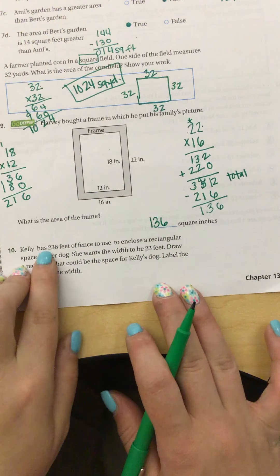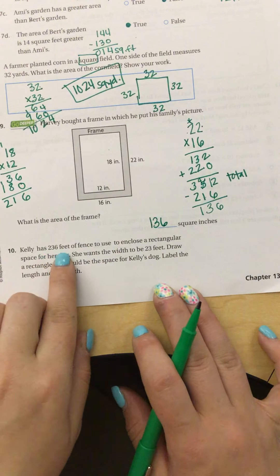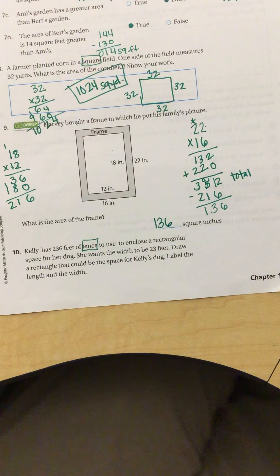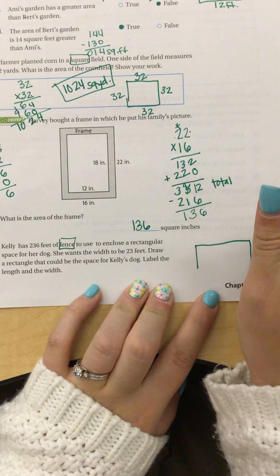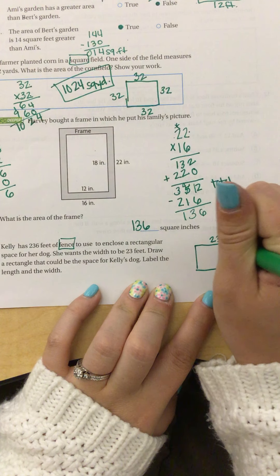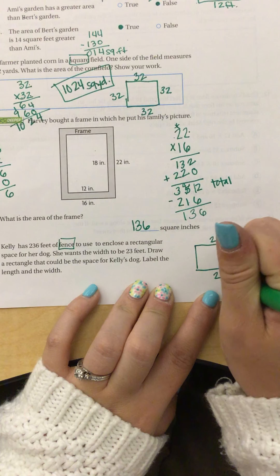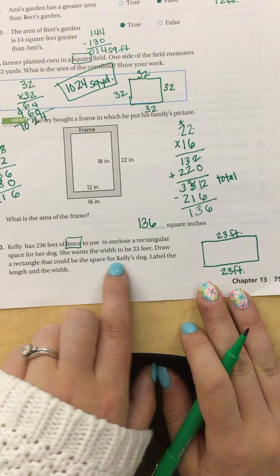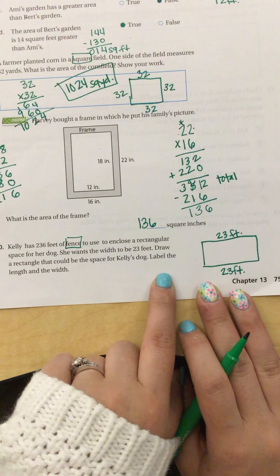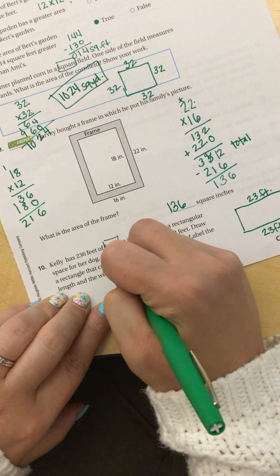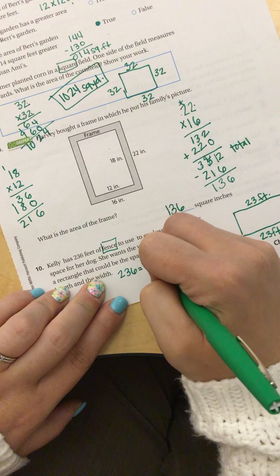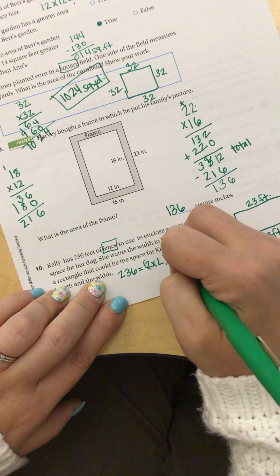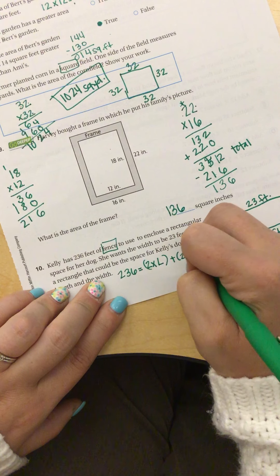Okay, next question. Kelly has 236 feet of fence. Well, fence, we know fence is perimeter. To use to enclose a rectangular space for her dog. She wants the width to be 23. So this is 23 feet, and then this would be 23 feet. Draw a rectangle that could be the space for Kelly's dog. Label the length and the width. Well, I know we have 236 equals 2 times the length, plus 2 times the width, which we know is 23.